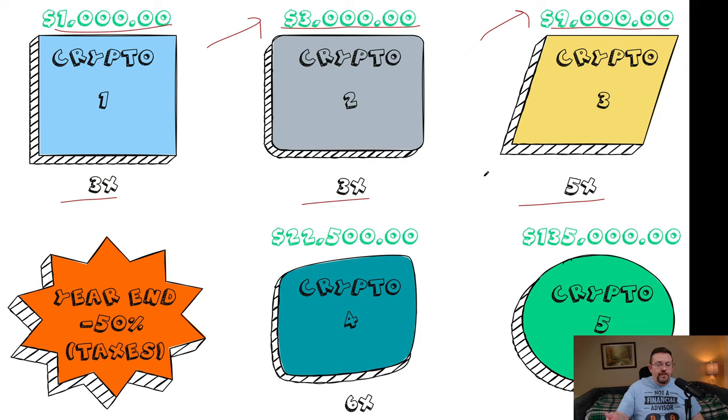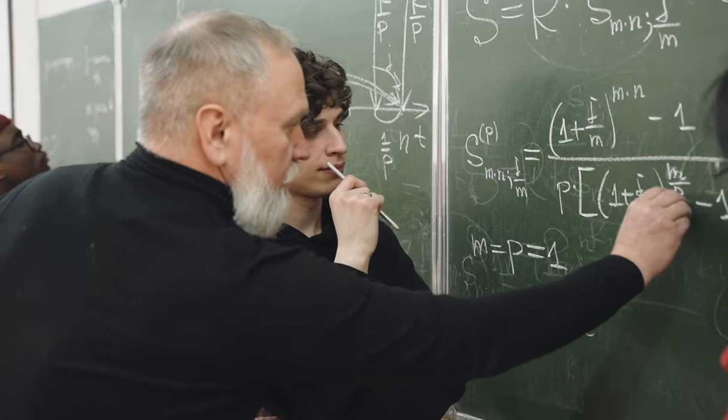But after this third round of investing where you ended up getting your $45,000, now, unfortunately, it's the year end. And the unfortunate reality is there are taxes. And let's just say that all this is short-term capital gains, so you're going to lose 50%. Again, just to keep this really simple, really basic, really easy to follow. Because we're talking about the concept here.